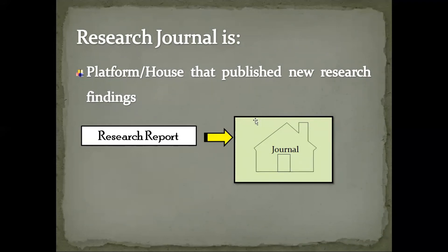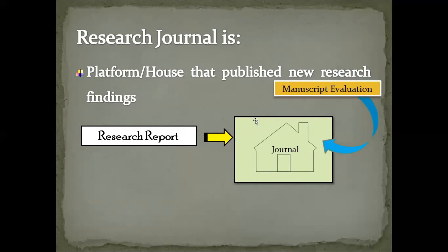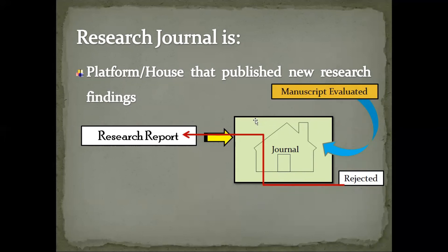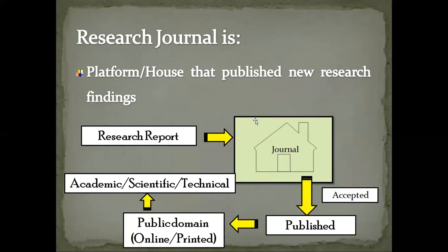A research journal is actually a platform or the house that publishes new research findings. After you carry out a research work and find some interesting findings, you prepare a manuscript and submit it to the journal. The research journal will evaluate the manuscript and, based on the knowledge and information about your research findings, will either accept or reject it. If rejected, it is sent back to the authors; if accepted, the research will be published.